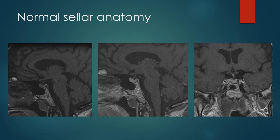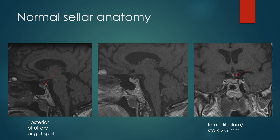For normal sellar anatomy, you have the gland itself, which should measure less than one centimeter. The posterior aspect of the pituitary gland is intrinsically hyperintense on T1-weighted imaging — we call that the posterior pituitary bright spot. Pregnant women are allowed to have a larger gland, but in non-pregnant women, the gland should be less than one centimeter. The gland does enhance; it is outside the blood-brain barrier, as does the pituitary stalk or infundibulum, which should measure approximately two to five millimeters.